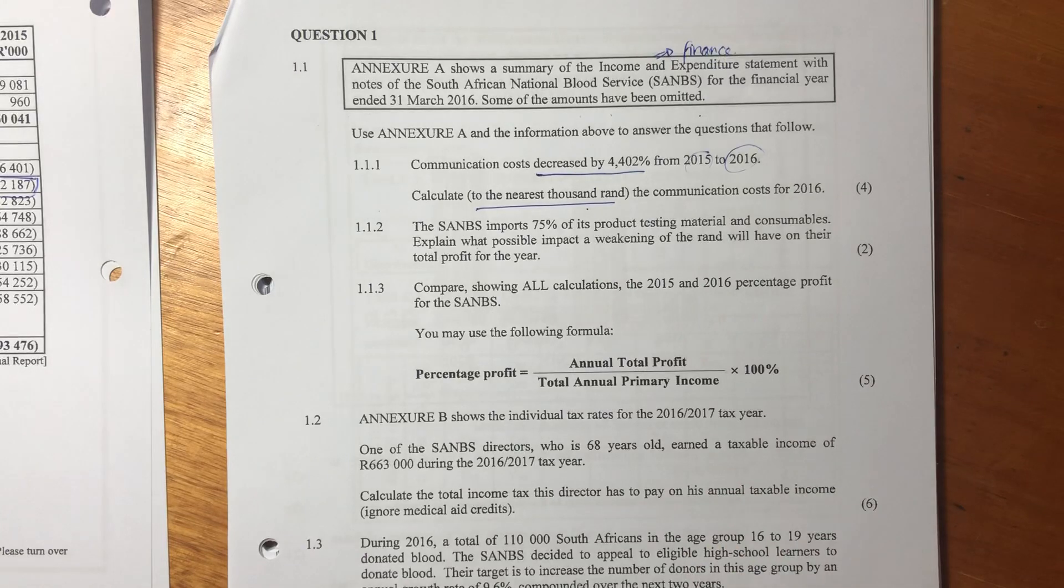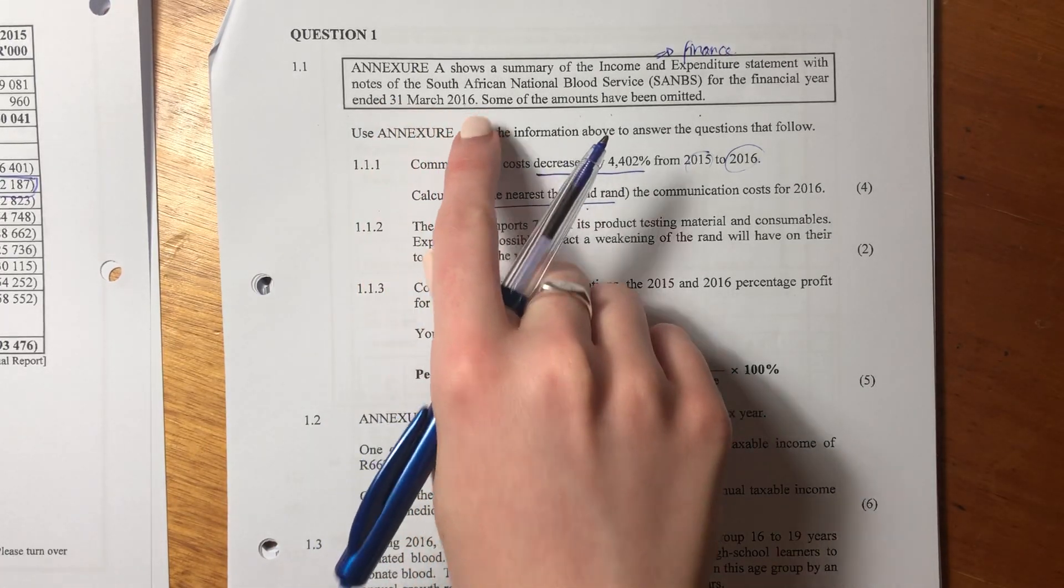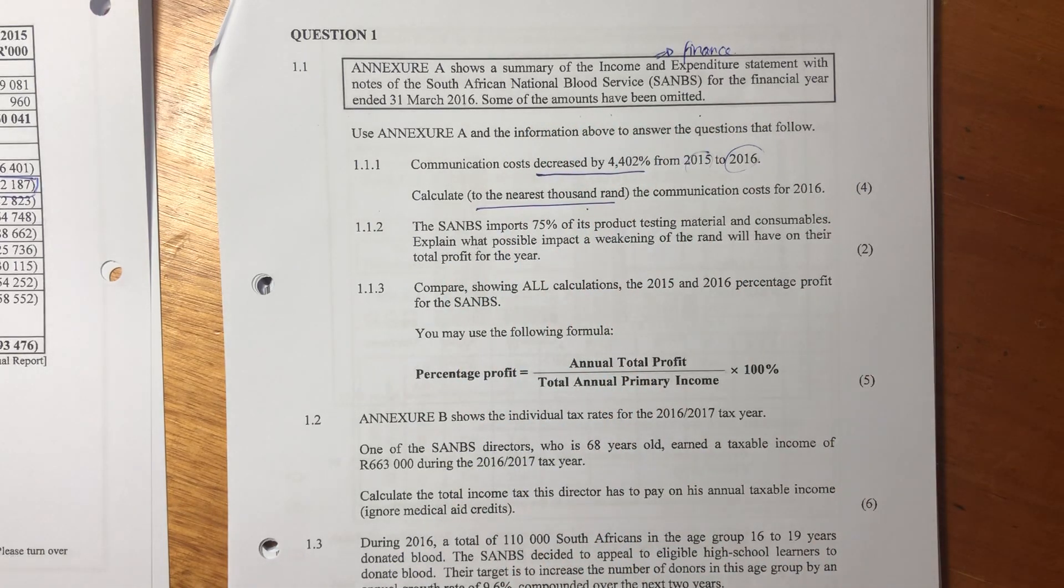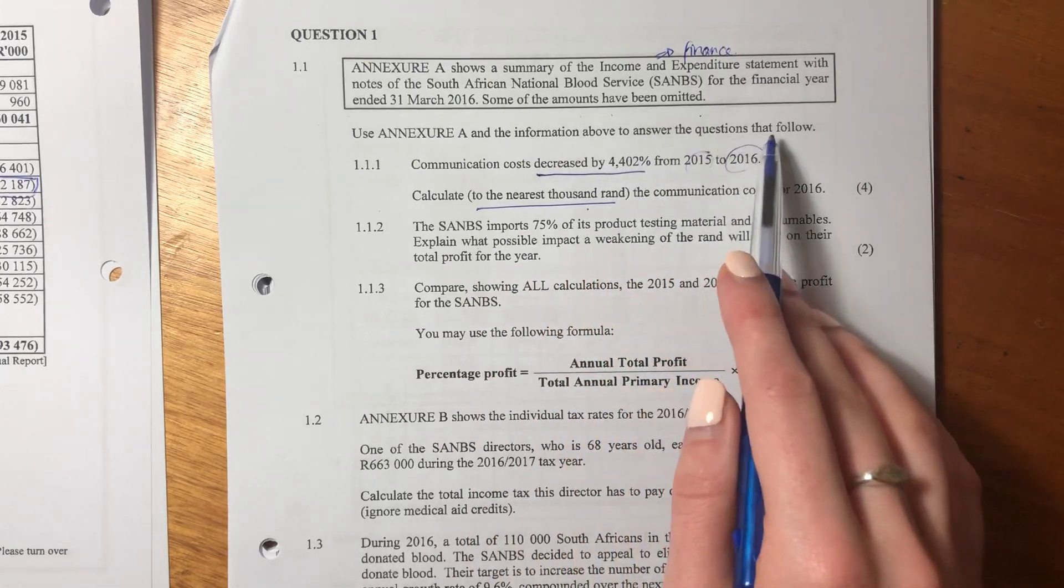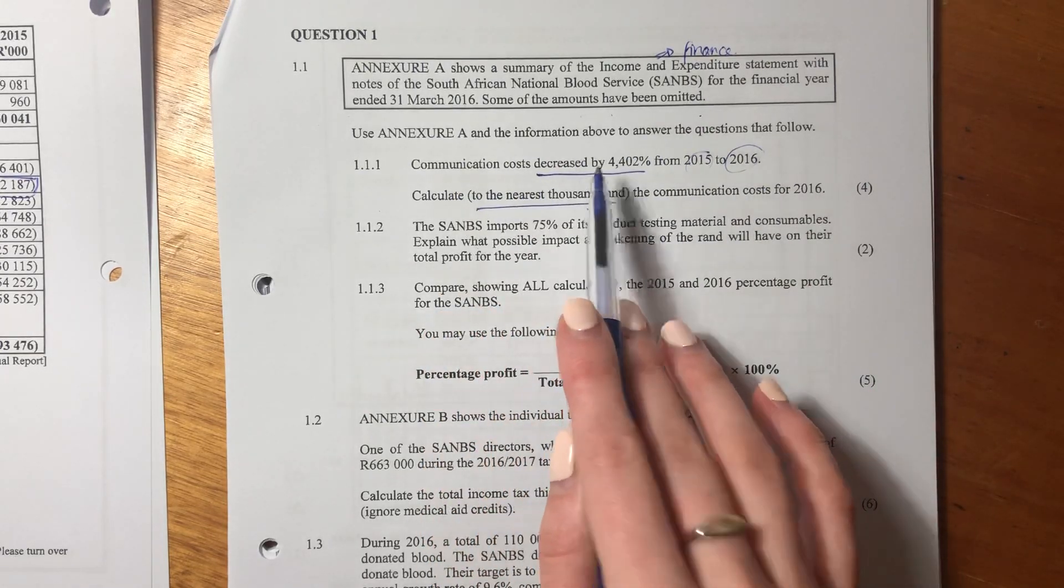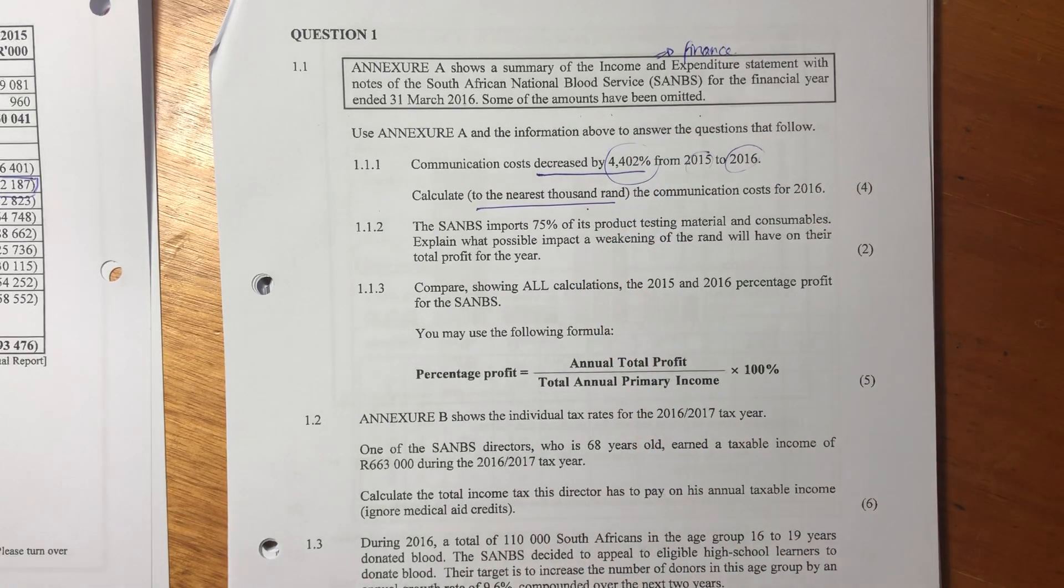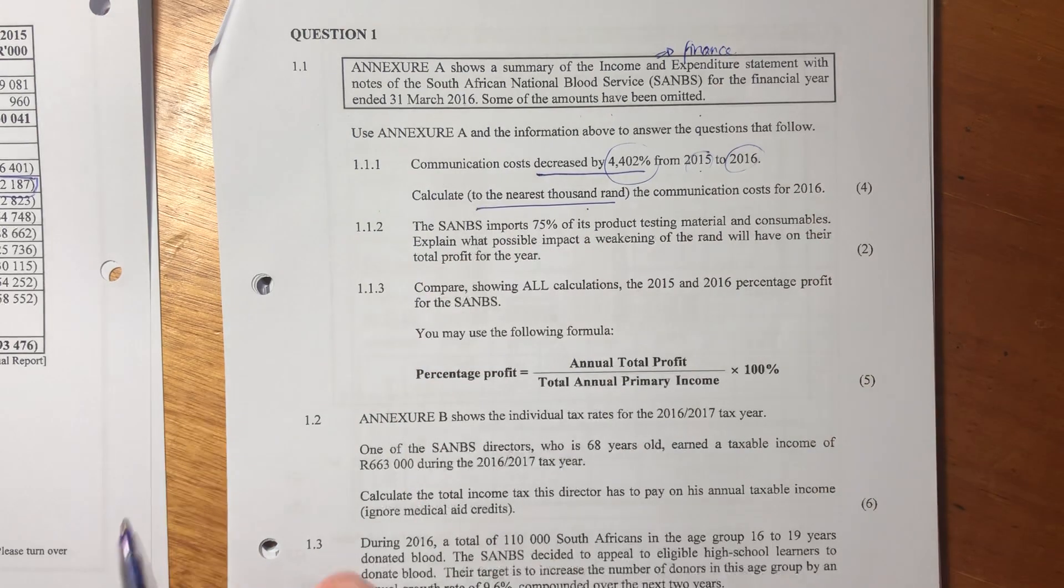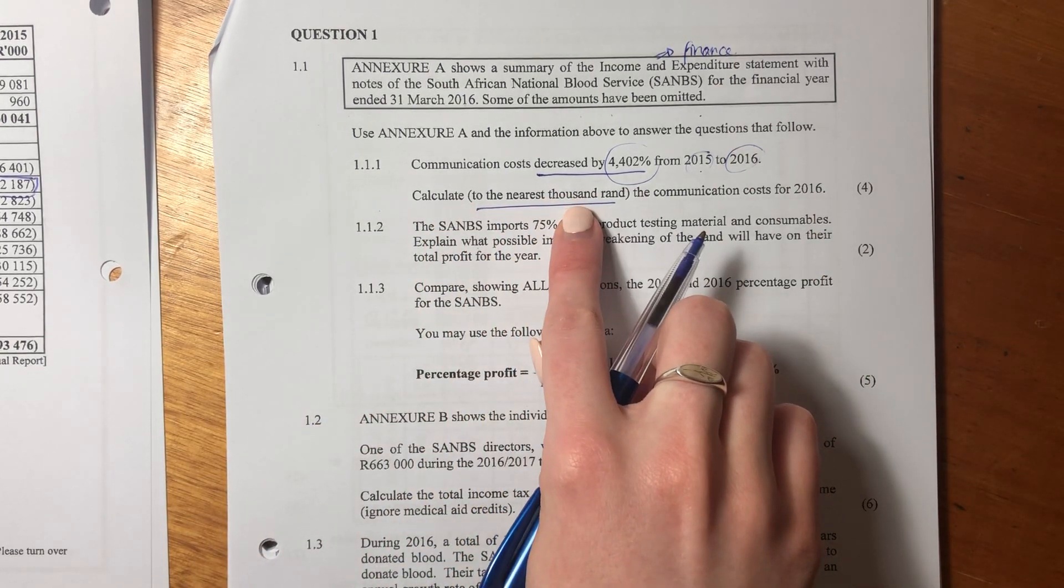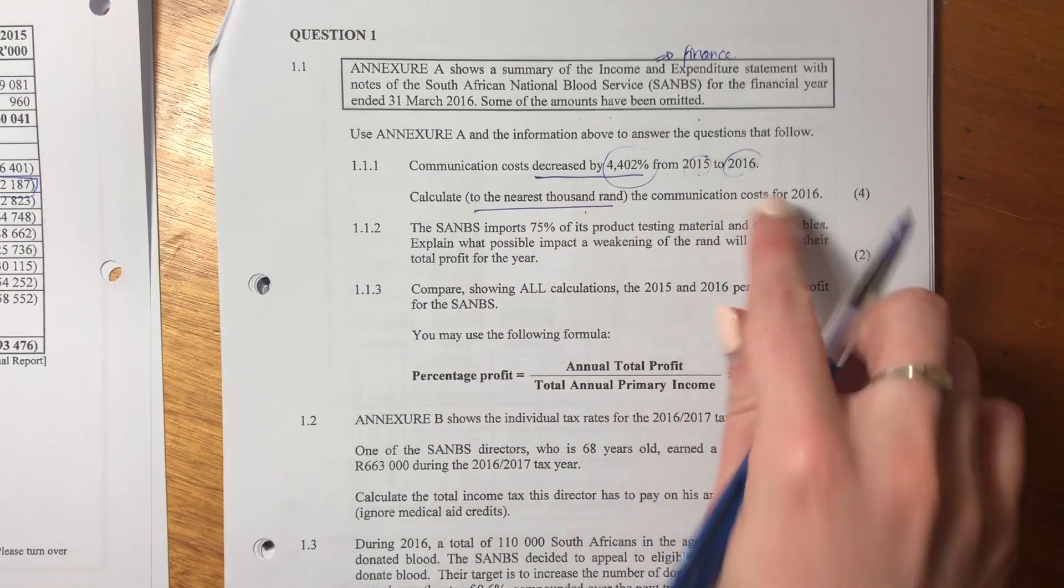So question 1 says, Annex J.A. shows a summary of the income and expenditure statements with notes of the South African National Blood Service for the financial year ended 31 March 2016. Some of the amounts have been omitted, so we know that they're probably going to ask us to calculate some amounts. Communication costs decreased by 4.402% from 2015 to 2016. It says calculate to the nearest 1,000 rand, that's important, the communication costs for 2016.